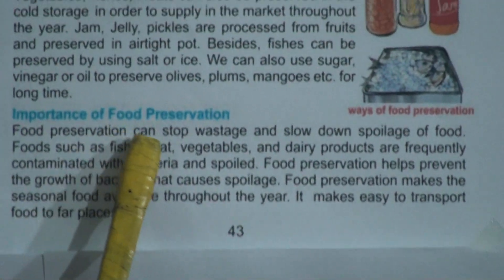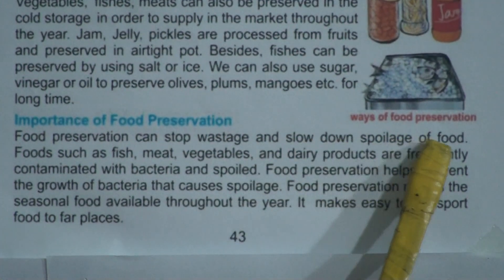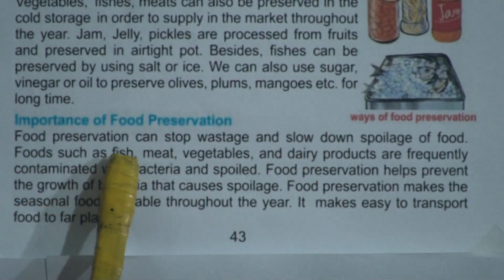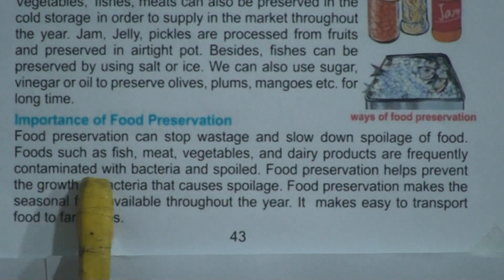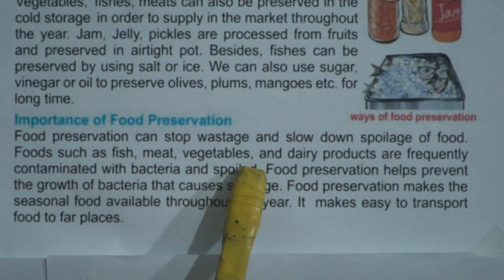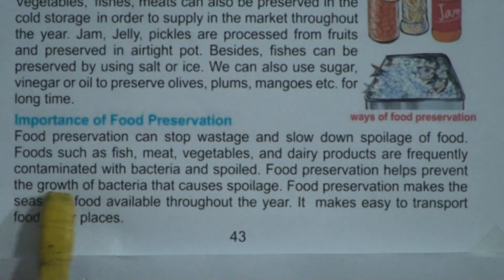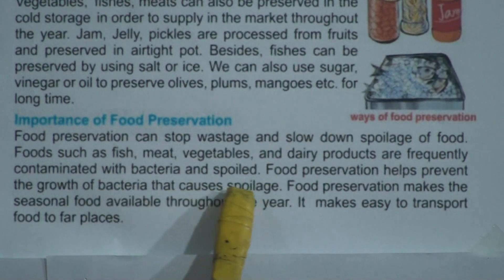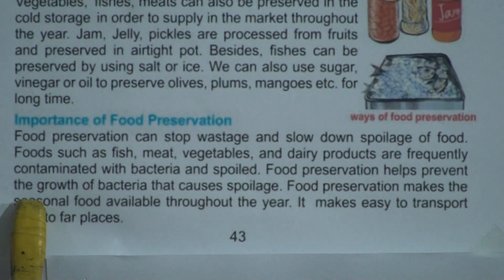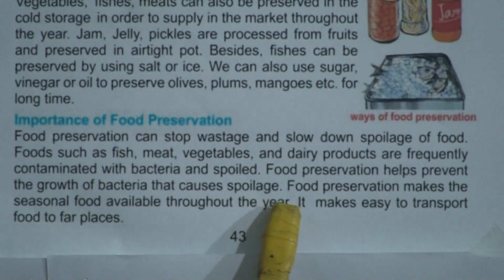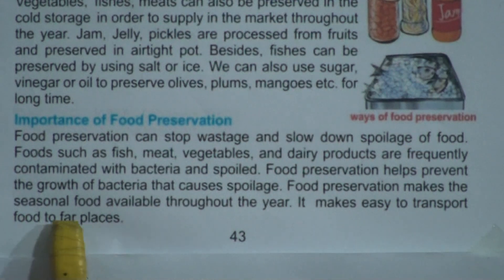Food preservation can stop wastage and slow down the spoilage of food. Food such as fish, meat, vegetables, and dairy products are frequently contaminated with bacteria when spoiled. Food preservation helps prevent the growth of bacteria that causes spoilage. Food preservation also makes seasonal food available throughout the year and makes it easy to transport food to different places.